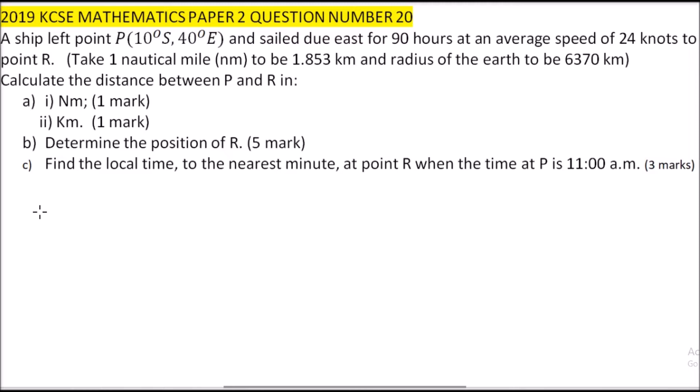and sailed due east for 90 hours at an average speed of 24 knots to point R. Take one nautical mile to be 1.853 kilometers, and radius of the earth to be 6,370 kilometers. Calculate the distance between P and R in nautical miles.